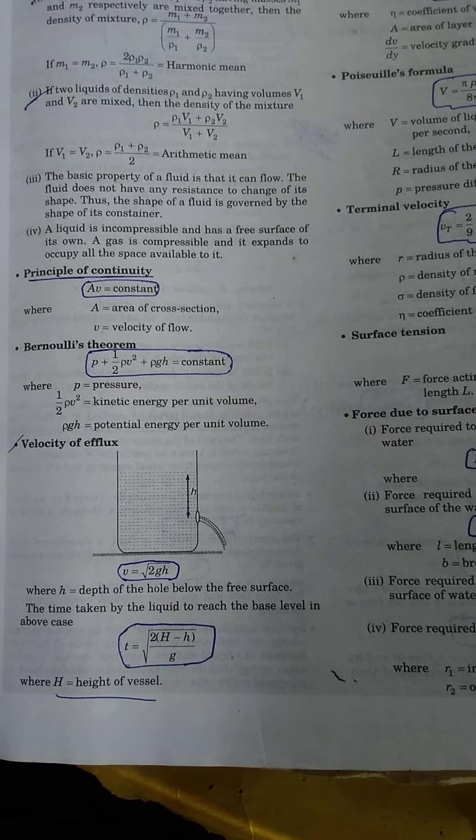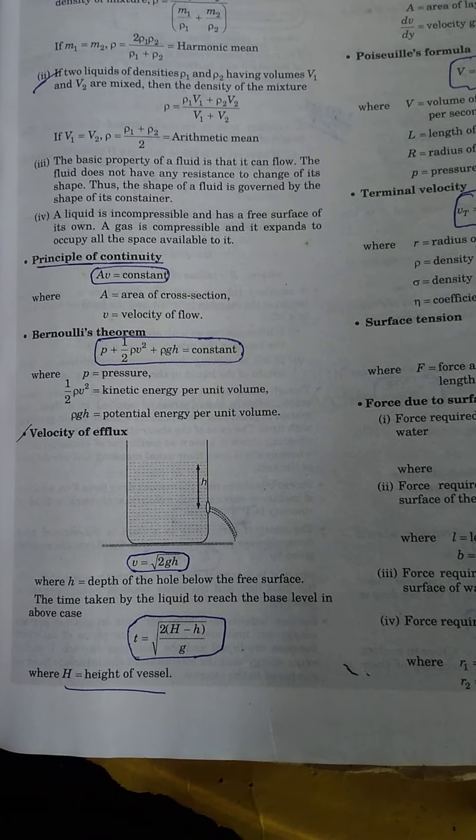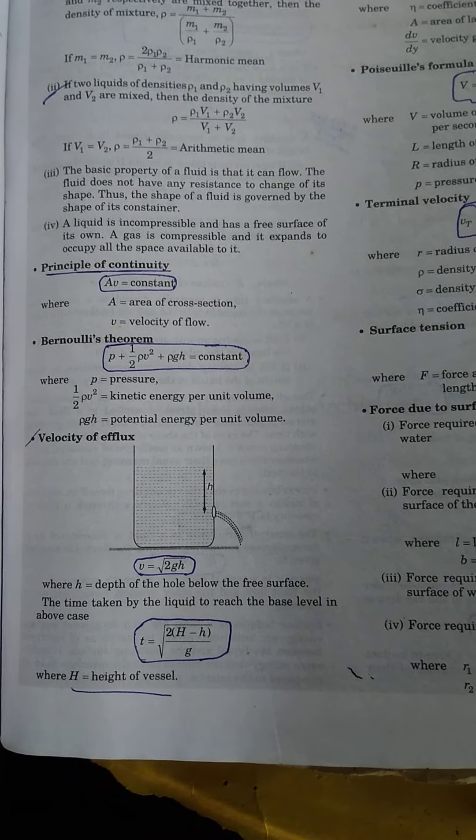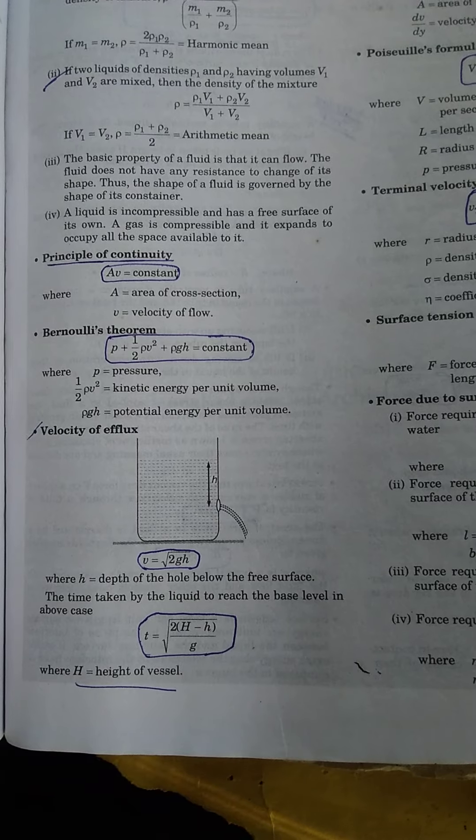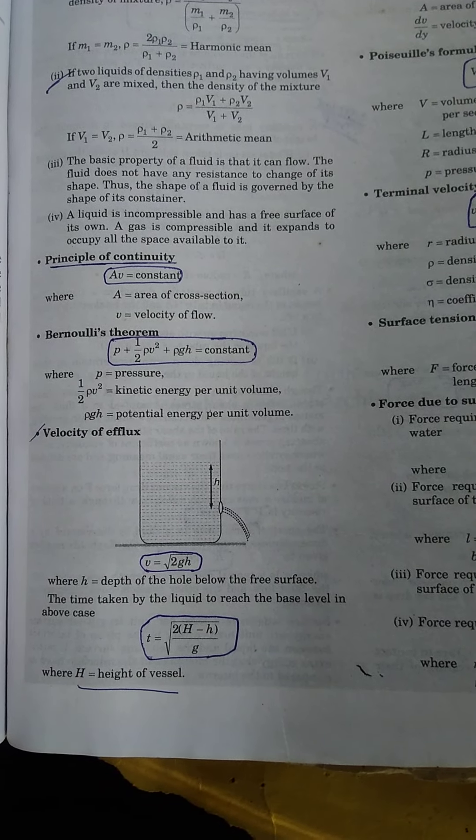Velocity of efflux: v equals √(2gh), where h is the depth of the hole below the free surface. Time t equals √(2H(H-h)/g), where H is the height of the vessel.